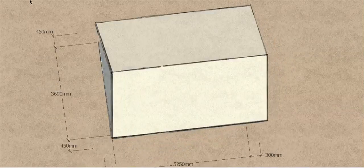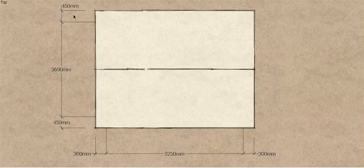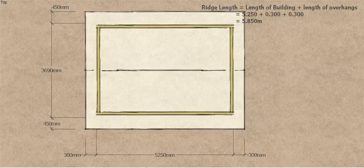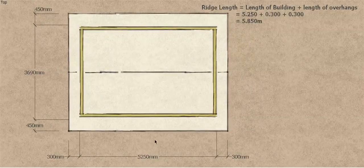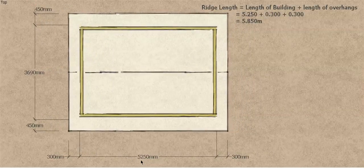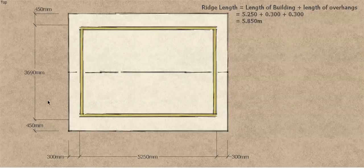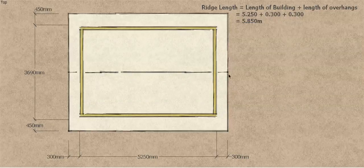So let's have a look at the plan. I'll just get the frame view on so you can see the actual structure. The building in this case is 5m 250 long with a 300mm overhang on each end, and the width doesn't really matter because all we want to do is the length of the ridge, so pretty simple.